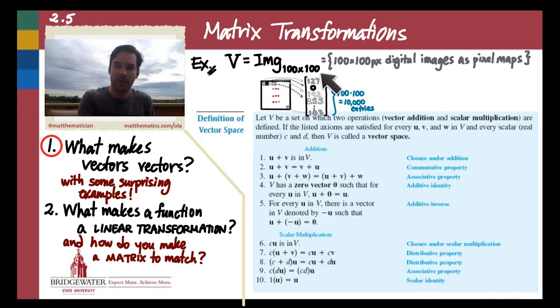And when we store all 100 times 100, all 10,000 of those numbers, then we've stored a pixel map of this digital image as, if you like, a vector in one 10,000 dimensional Euclidean space. We've assigned each one of these a number. So the elements in this space behave just like they're elements in R^10,000.